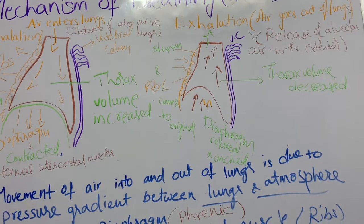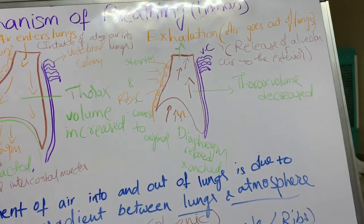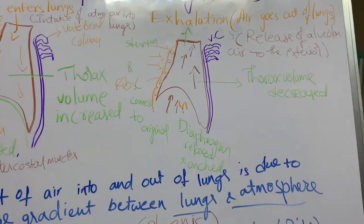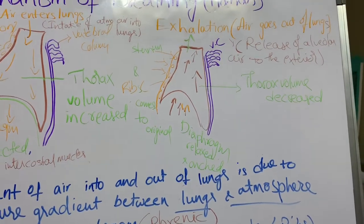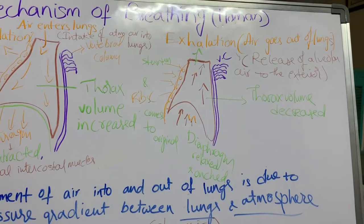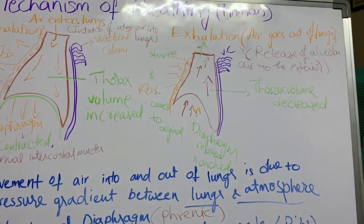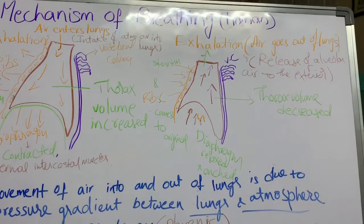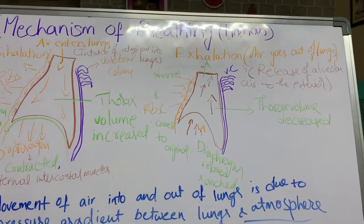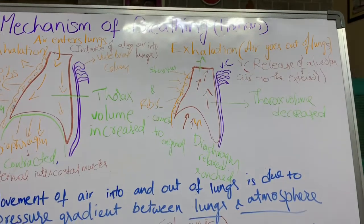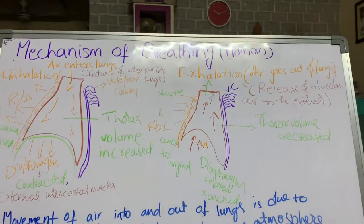Forced exhalation or expiration is due to the contraction of internal intercostal muscles and the lateral abdominal muscles. During forced expiration in pranayama, we forcefully expel the air. For this, internal intercostal muscles and lateral abdominal muscles play an important role. The abdomen also plays a role in breathing.